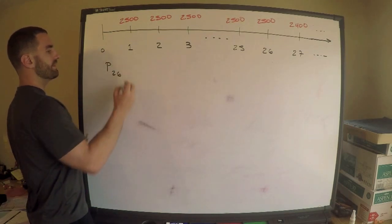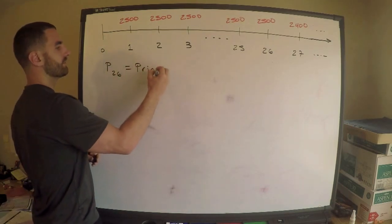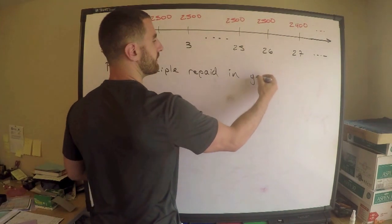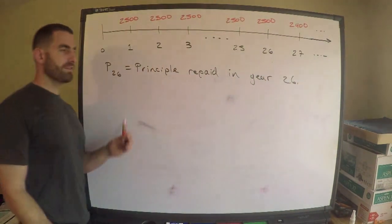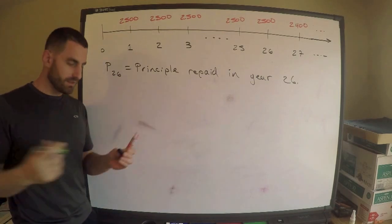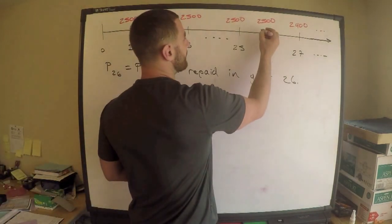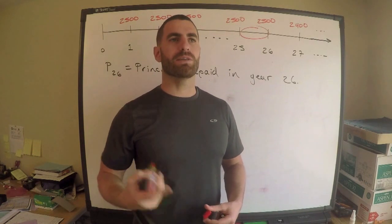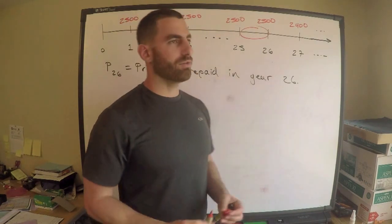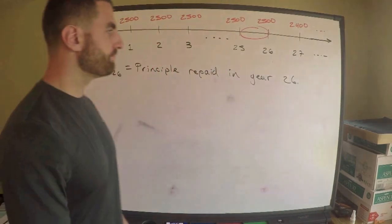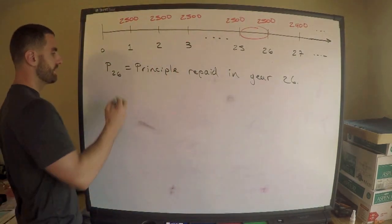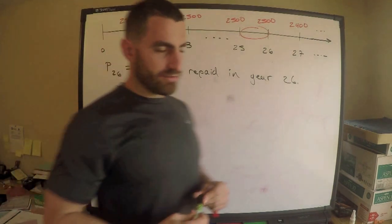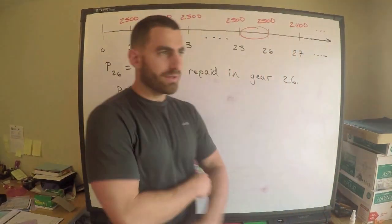Now they tell me also the principal repaid in year 26, so P sub 26 is the principal repaid in year 26. By the way, this is pretty much standard notation, just P sub 26, not very creative or anything, but whatever, that does it. We're interested in how much principal, how much of the balance did we actually take off with our payment in year 26? And here's the deal, I'm a little surprised that SOA didn't utilize this.